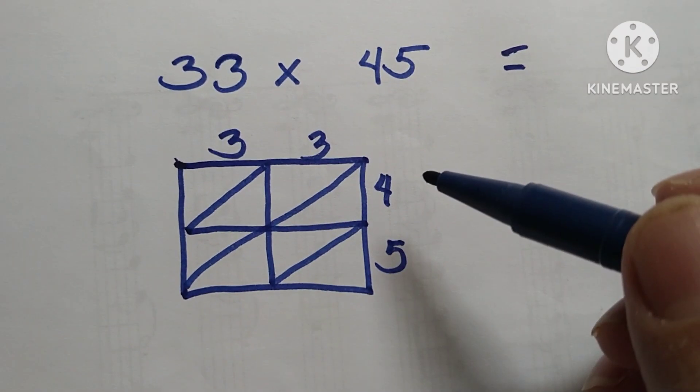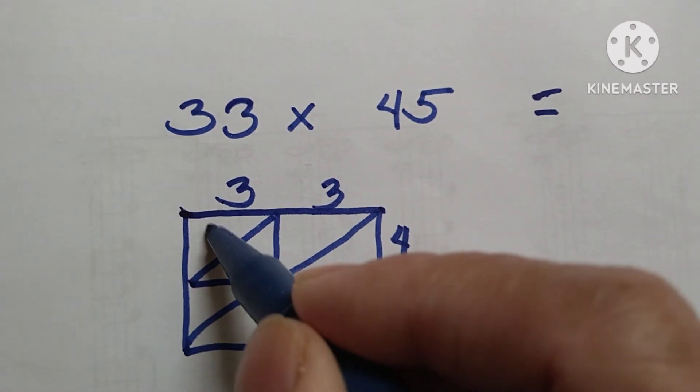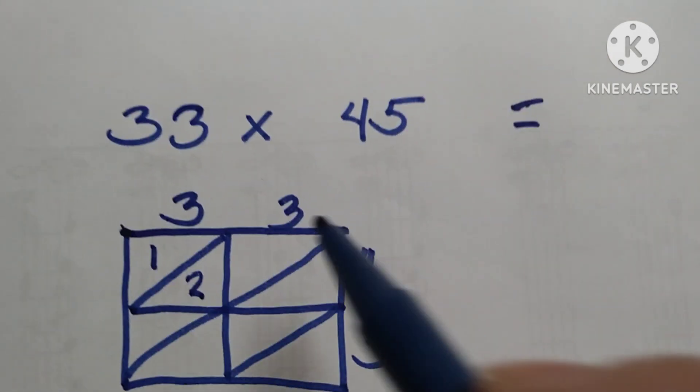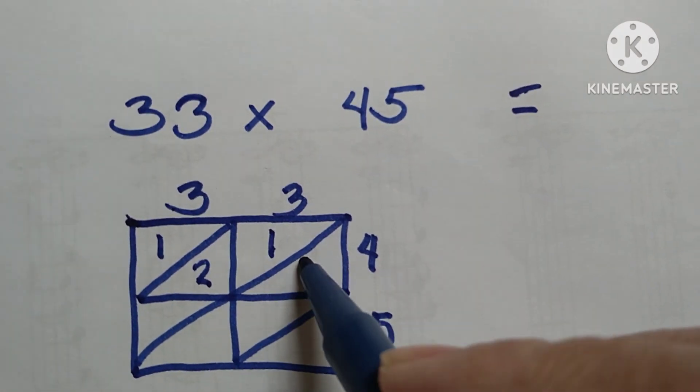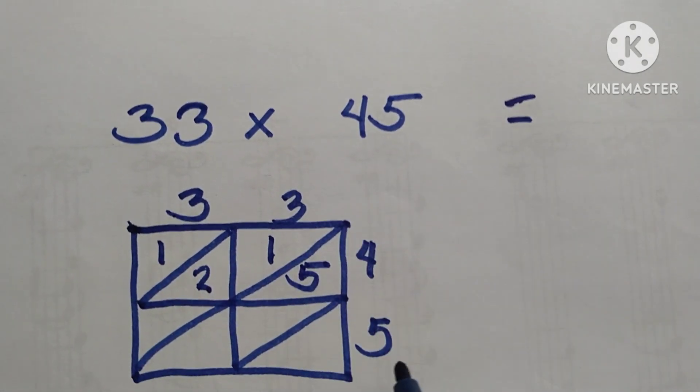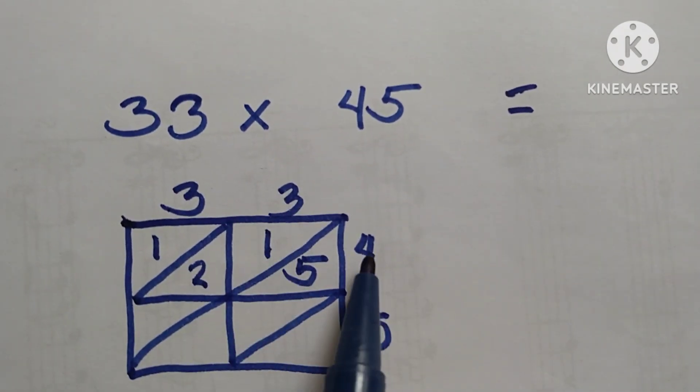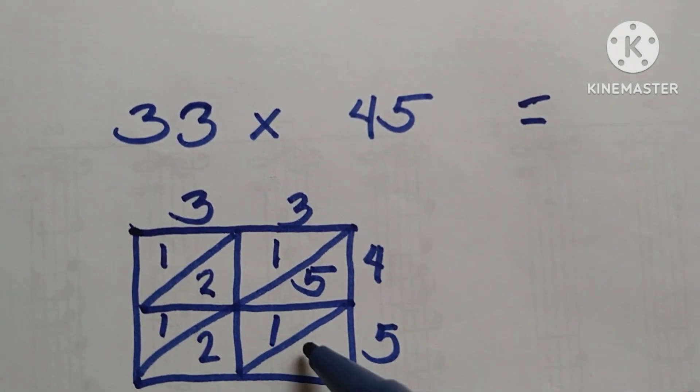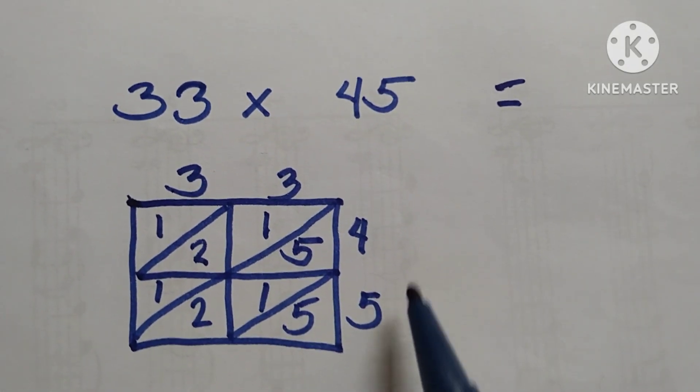First, multiply three times four is 12. Put the one here, down on the right side, and two on the other side. Then three times five is 15—write it on the other side. If you're done with the first digit, now we move on to the second digit: three times four is 12, and three times five is 15. We're done with the first step and then the second step.